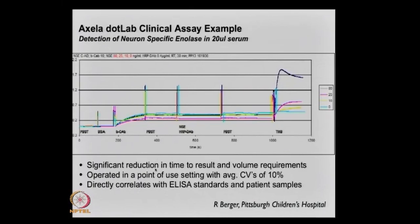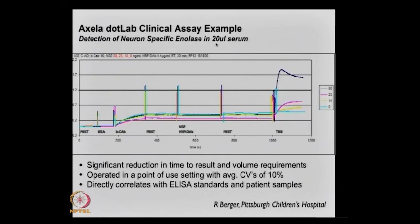Here is one of the early clinical examples using the commercial instrument. Now that there is an instrument others can use, people can configure their assay and work out how to get it to work best. This is the detection of neuron-specific enolase, which is associated with traumatic brain injury. Dr. Berger was using this primarily to look at markers in babies — when babies have shaken baby syndrome. Being able to use only 20 microliters is very important because you cannot get too much blood from babies.